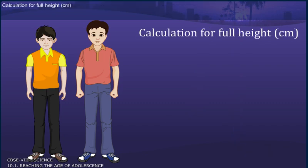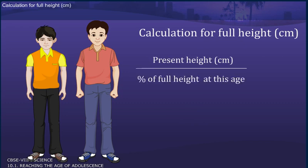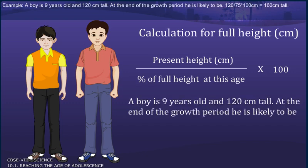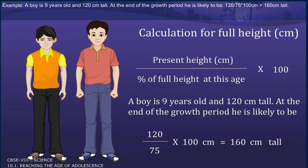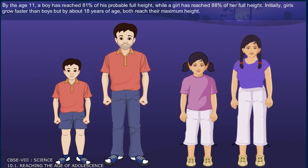To calculate full height: take present height in centimeters, divide by the percentage of full height at this age as given in the chart, then multiply by 100. For example, a boy is 9 years old and 120 cm tall. At the end of the growth period, he is likely to be 120 divided by 75, multiplied by 100 cm, which equals 160 cm tall. By the age of 11, a boy has reached 81% of his probable full height, while a girl has reached 88% of her full height. Initially, girls grow faster than boys, but by about 18 years of age, both reach their maximum height.